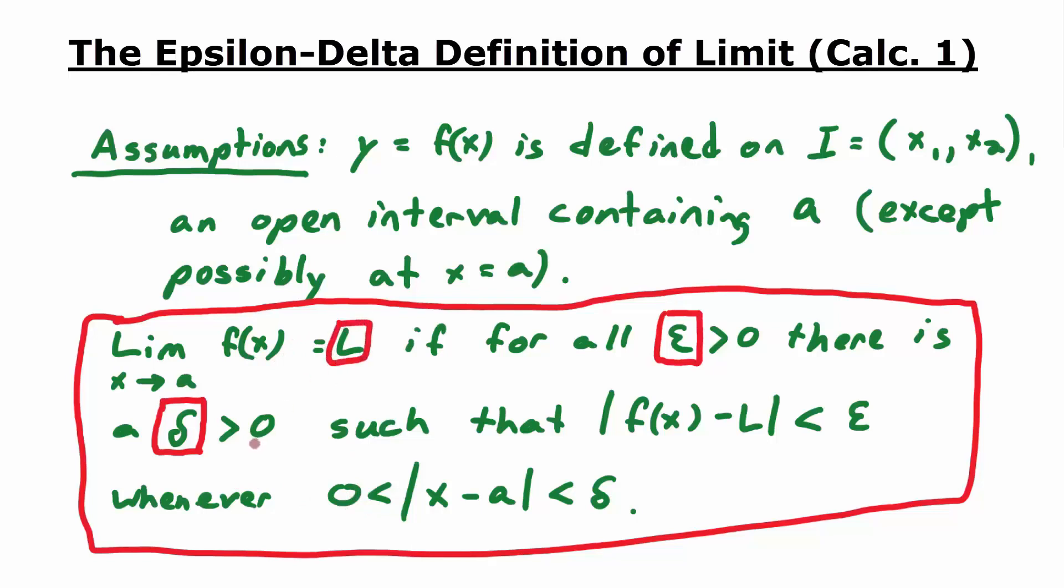And again, that's just a formal way of saying, the closer x gets to A, at least eventually, the closer x gets to A, eventually, the closer f of x gets to L.